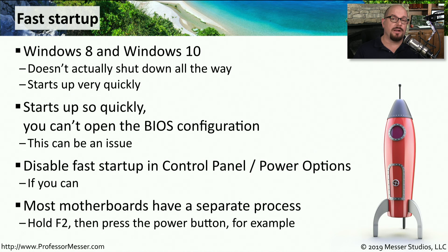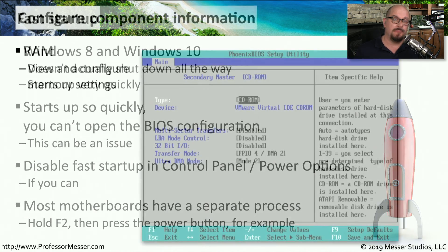Some boards might also provide other options to gain access to the BIOS configuration. For example, some boards would have you hold down the F2 key and then power on the system, and then you're able to gain access to the BIOS. There are a number of hardware configurations that you can view and, in some cases, make changes to from inside this BIOS configuration.